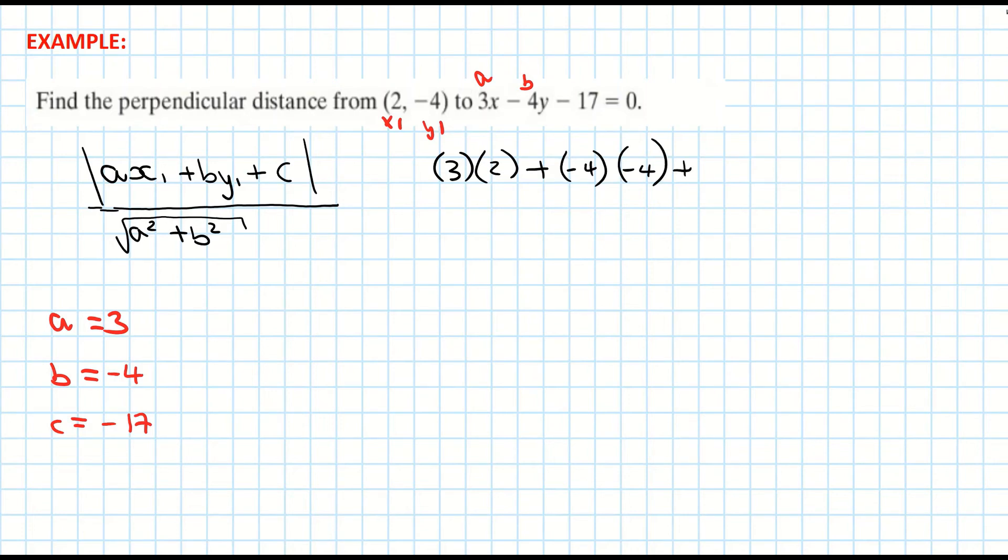Plus my c, which is -17. That's the value of my c. Put it in your modulus brackets. And that's all over the square root of a squared, which is 3 squared, plus my b, which is -4 squared.